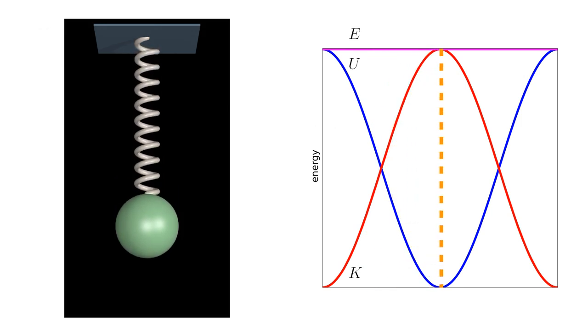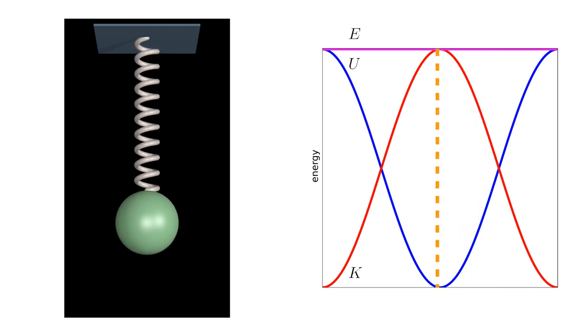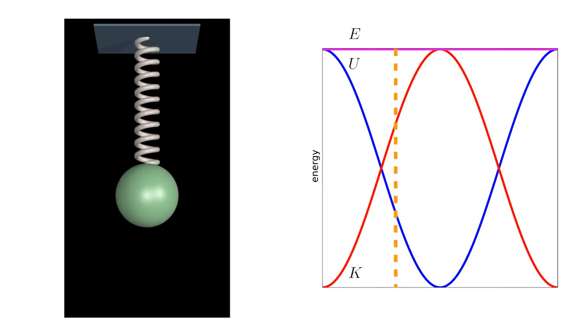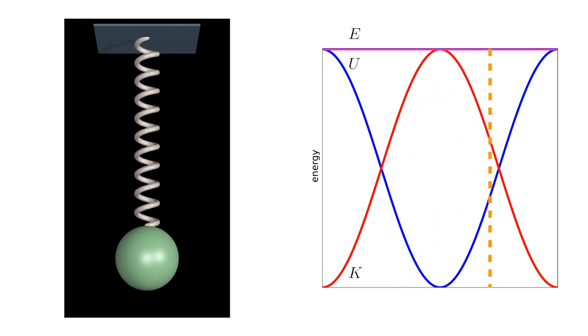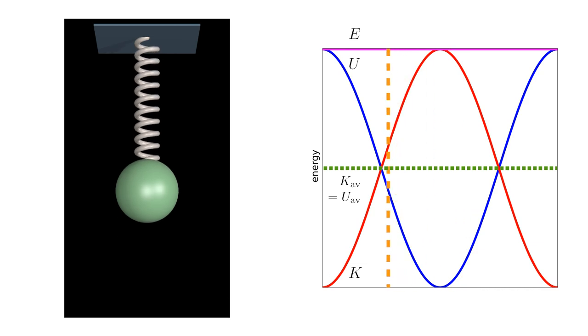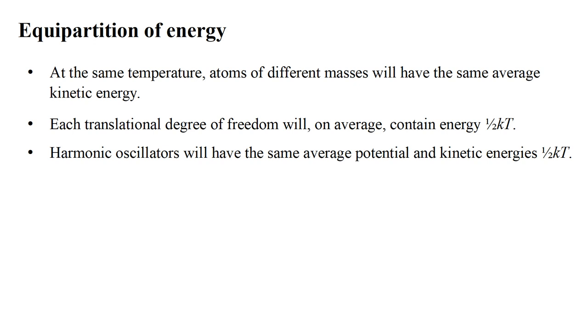In video three of the mechanics series, we saw that for a mass oscillating on a spring, a harmonic oscillator, energy continuously transitions between potential and kinetic forms, with the average kinetic energy equal to the average potential energy. Therefore, another aspect of equipartition of energy is that harmonic oscillators will have the same average potential and kinetic energies, each one-half KT.